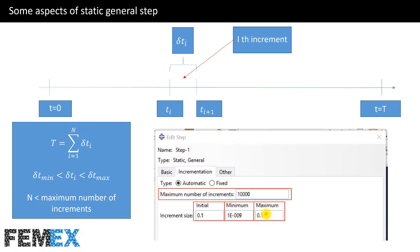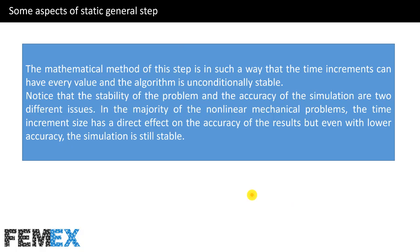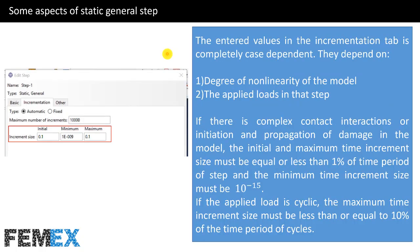And the number of increments must not reach to its value. The mathematical method of this step is in such a way that the time increments can have every value and the algorithm is unconditionally stable. This is one of the main specifics of implicit methods. Notice that the stability of the problem and the accuracy of the simulation are two different issues. In the majority of the non-linear mechanical problems, the time increment size has a direct effect on the accuracy of the results. But even with lower accuracy, the simulation is still stable.